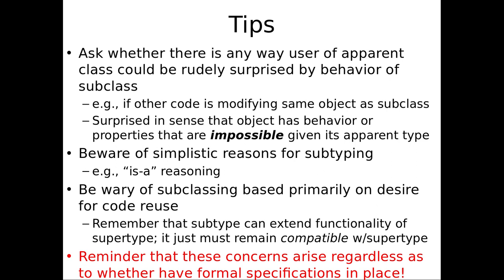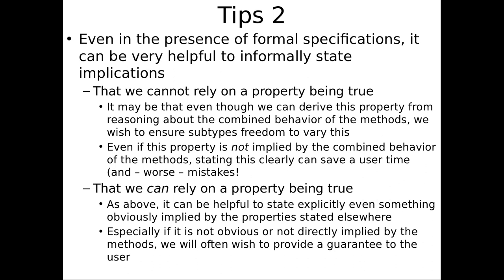The key here is to ask: is there any way a user of the apparent class could be rudely surprised by the behavior of the subclass? If someone only knows the apparent class — the supertype — could they be shocked, thrown off, caused a bug by the subtype? Something that appears impossible given the supertype is made possible by the subtype in a way that violates their assumption.